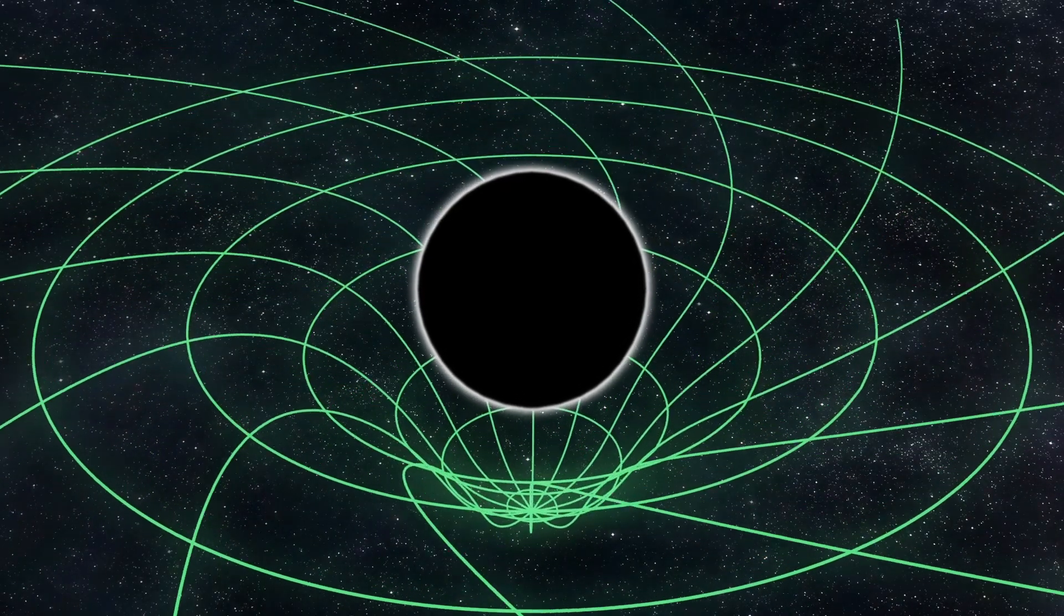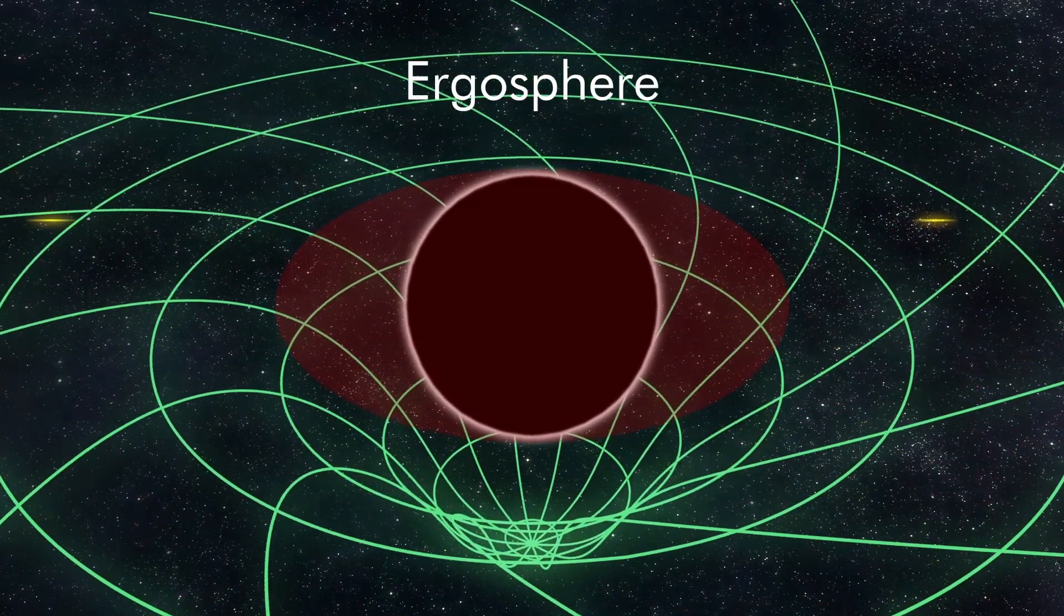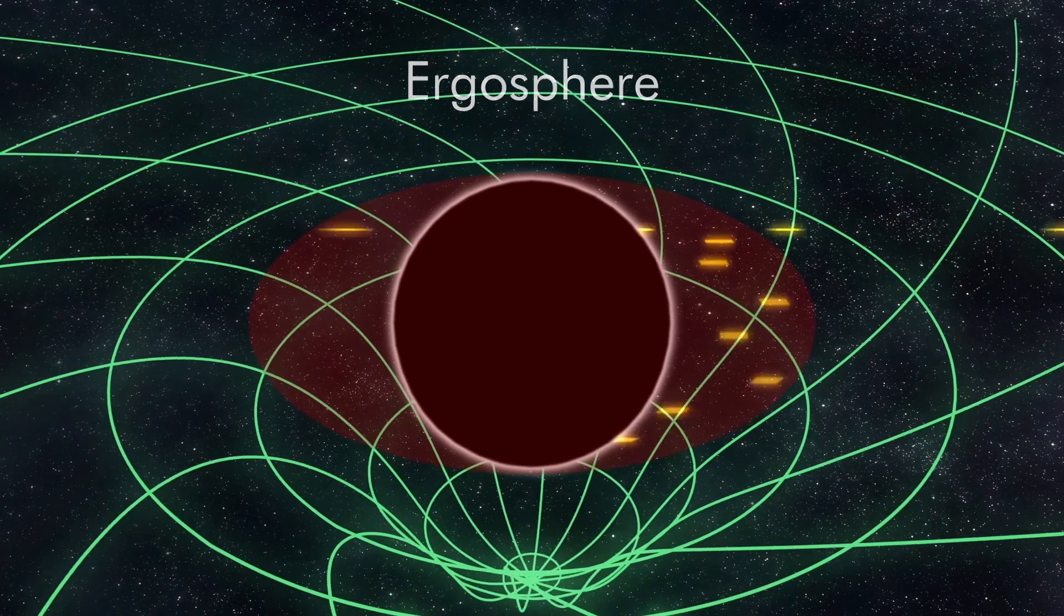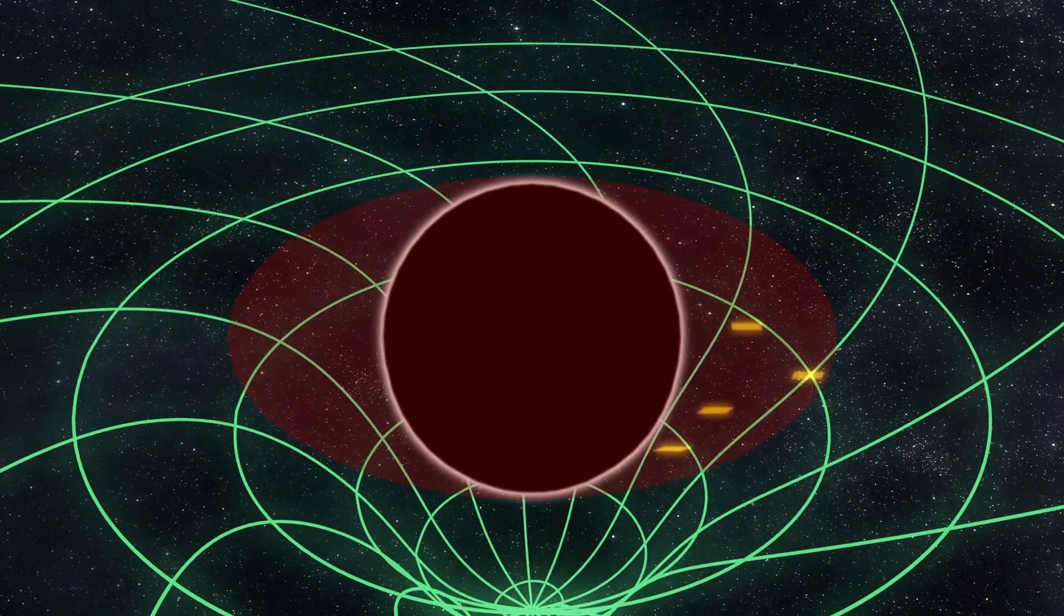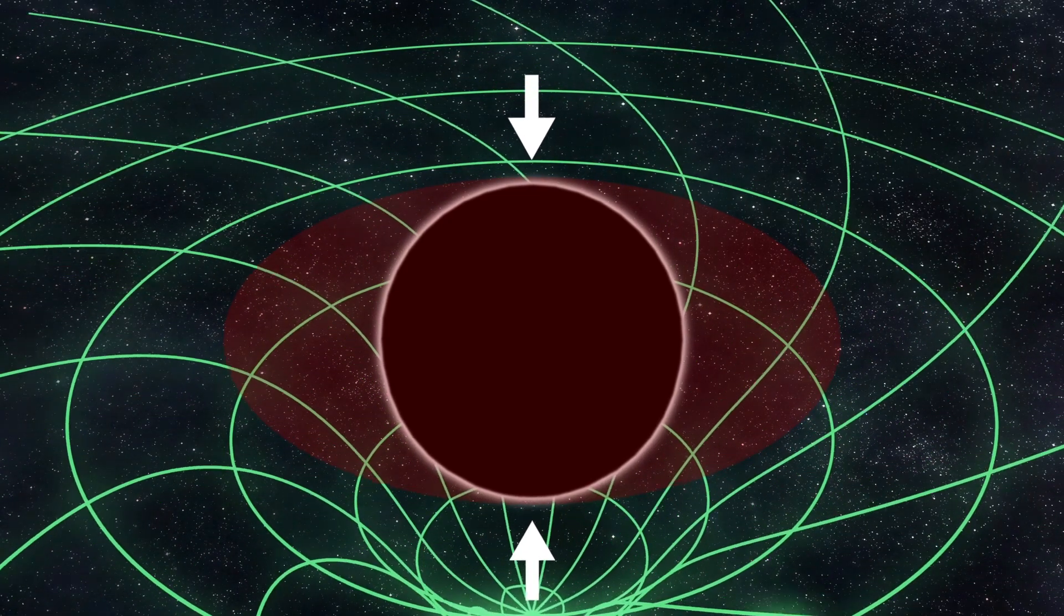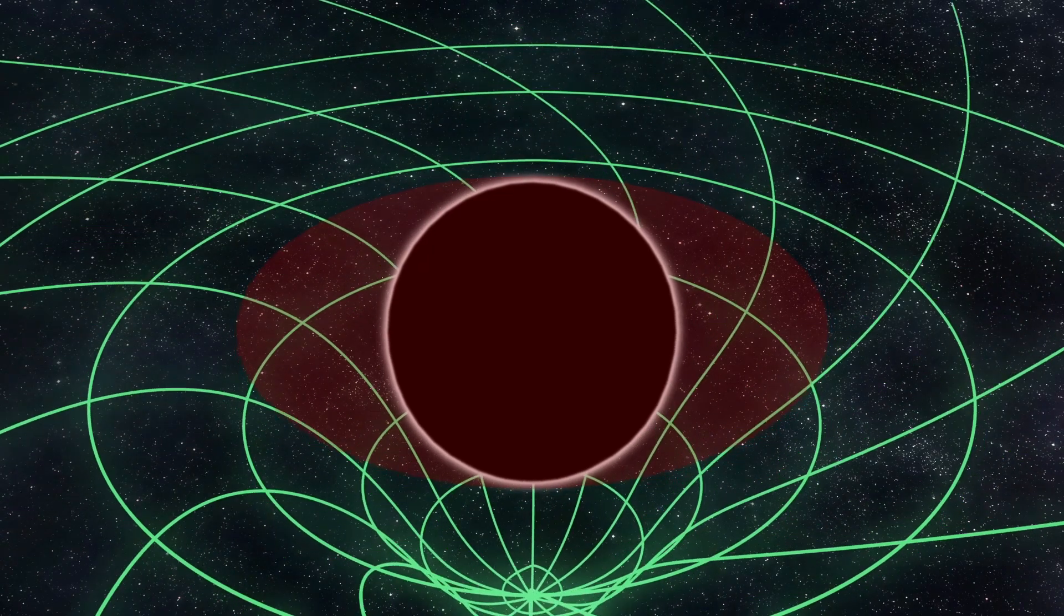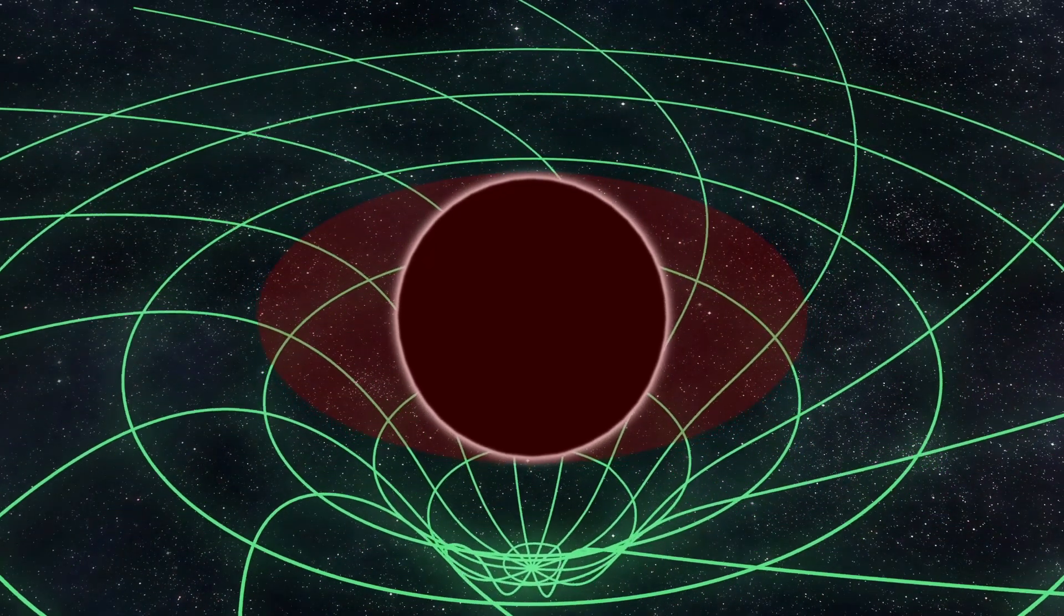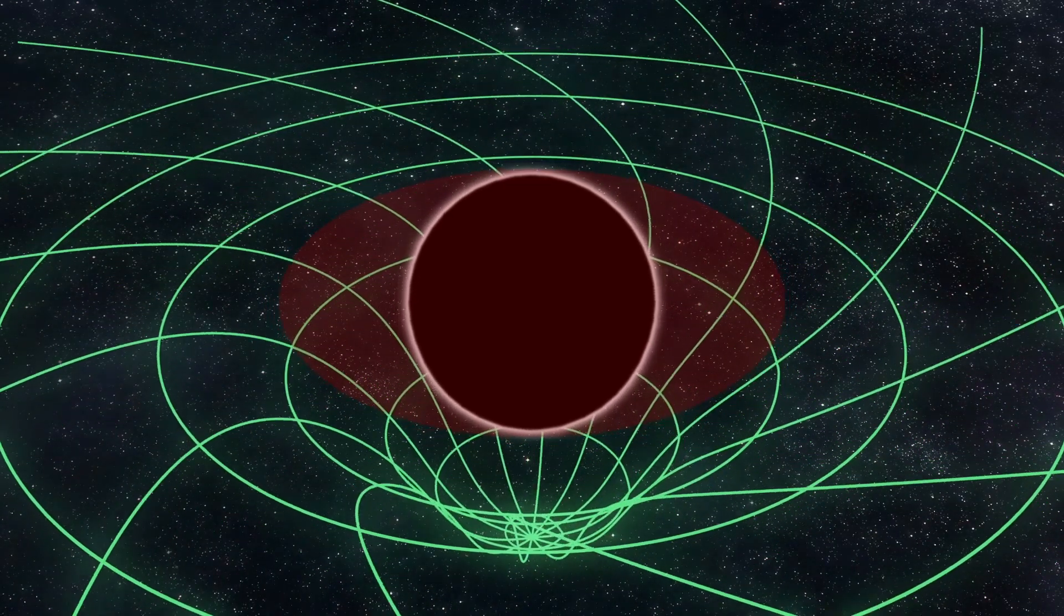This spacetime current is so extreme, it creates a region called the ergosphere, where nothing, including light, can overcome it. Inside the ergosphere, nothing can stand still. Everything inside this region is dragged along by the spinning spacetime. The event horizon fits inside the ergosphere, and they touch at the poles. So in one sense, black holes are like whirlpools of spacetime. Once inside the ergosphere, you are caught by the current. And after you cross the event horizon, you disappear.